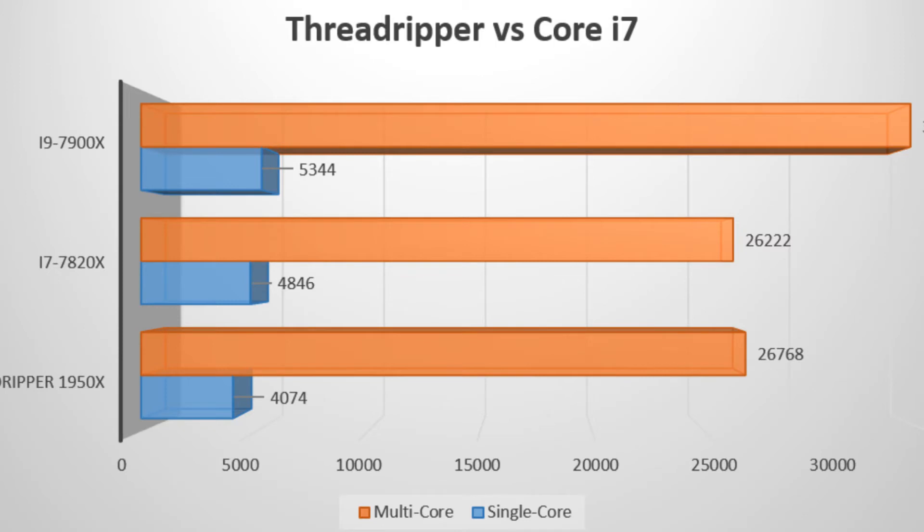The Intel i9-7900X has 10 cores and 20 threads. It is a high-end processor, and talking about clock speed, the Intel i9-7900X reaches up to 4.5 GHz, making it a very high-end chip.